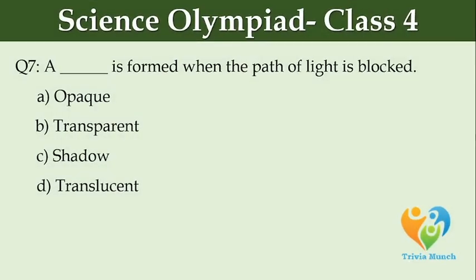A dash is formed when the path of light is blocked. Option A: opaque. Option B: transparent. Option C: shadow. Option D: translucent.